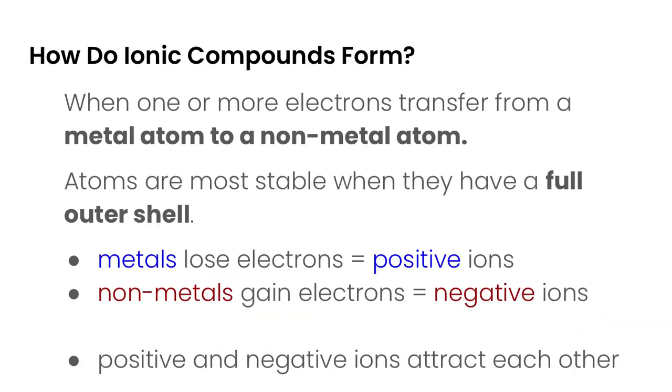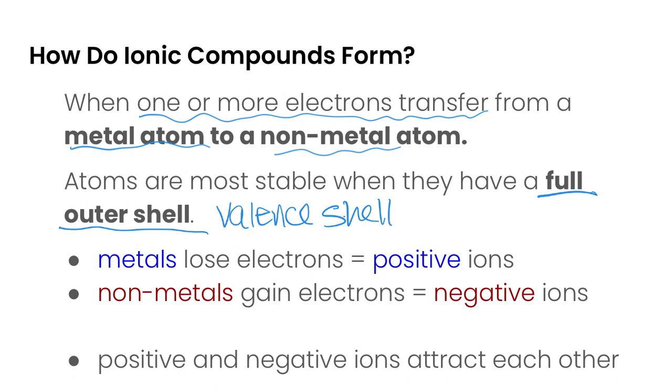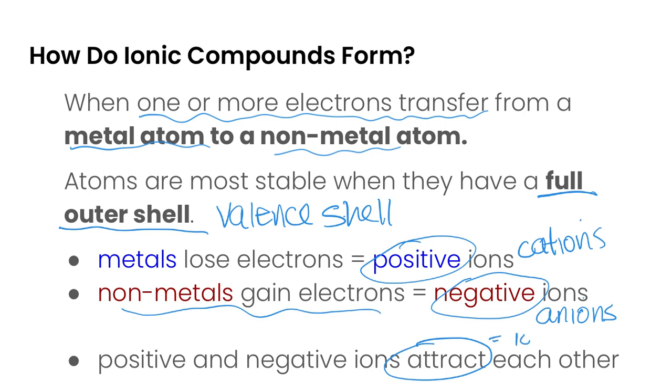So how do ionic compounds form? Well we need to remember that atoms are most stable when they have a full outer or valence shell. So in an ionic compound what happens is one or more electrons are transferred from the metal to the non-metal in order to create ions. The metals will lose electrons so they become positive ions or cations, and non-metals will gain electrons so they'll form negative ions which are also known as anions. And the positive and negative ions attract each other and this attraction is actually what's called an ionic bond.